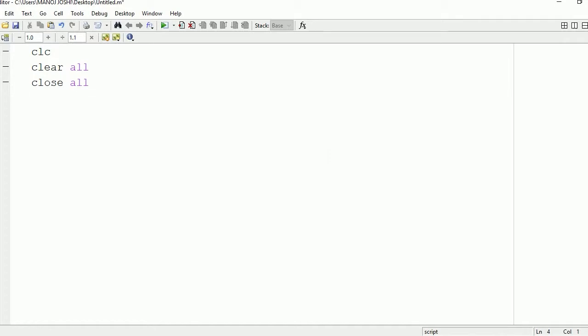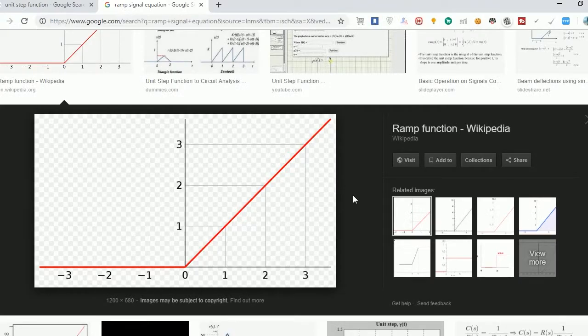Now let's have a look at the ramp signal. Here you can see that for n is greater than or equal to 0, the signal is linear, and for other values it is 0. So we are going to plot the same signal on MATLAB.